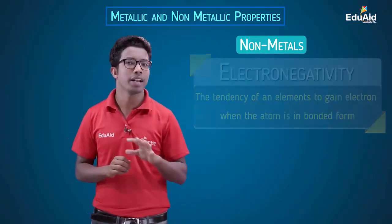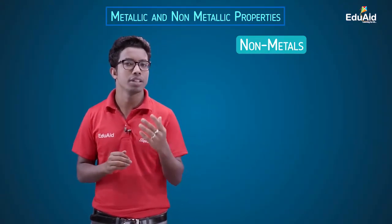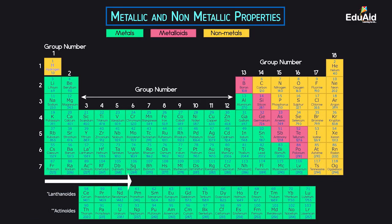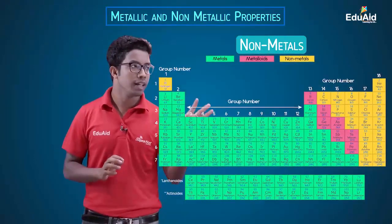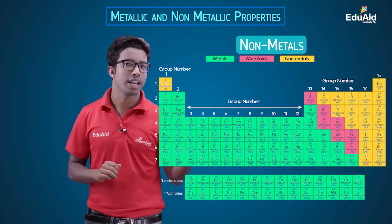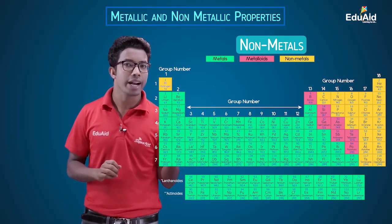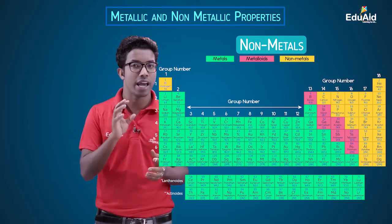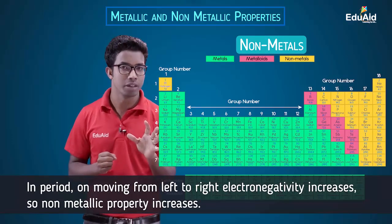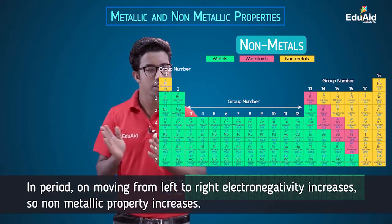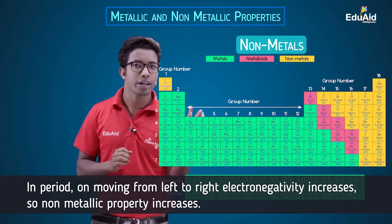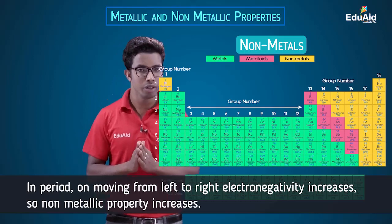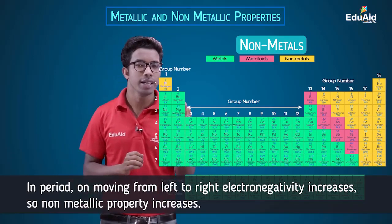Now let's see how non-metallic character changes in the periodic table — it will be completely opposite to metals. In periods, on moving from left to right, the effective nuclear charge increases, so the outermost electrons are pulled more and more strongly by the nucleus. The atoms on the right-hand side have more power to pull electrons, so their electronegativity increases from left to right in a period. That means the non-metallic property also increases from left to right in a period.